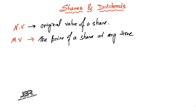The next term is 'at par' — spelled P-A-R. At par means if the market value of the share is the same as its nominal value, that means MV equals NV. If the market value of a share equals its nominal value, then the share is called at par.